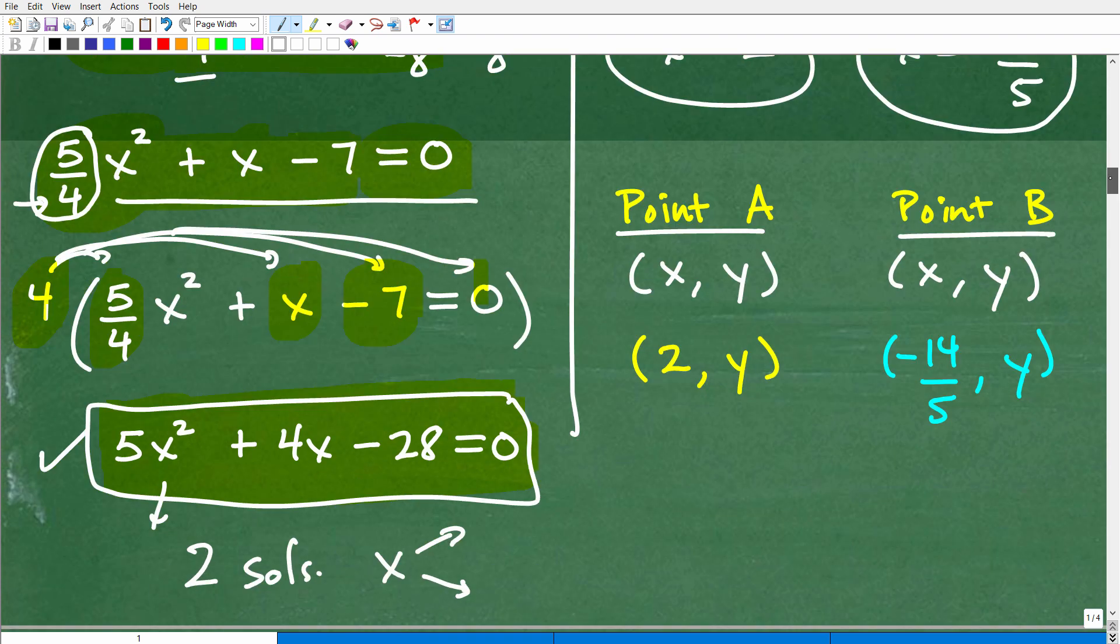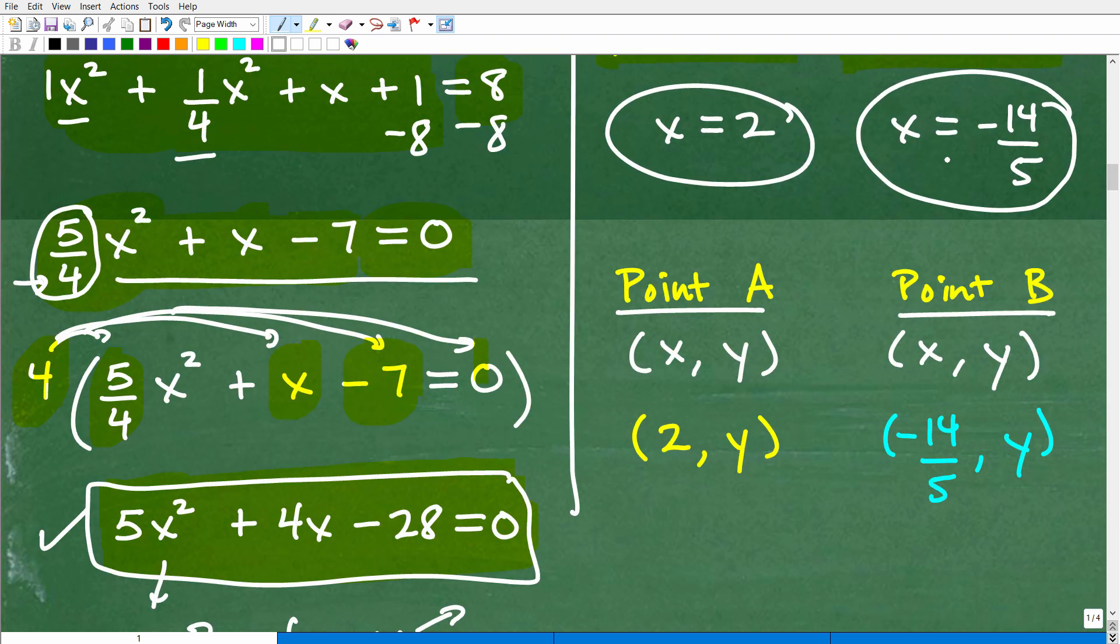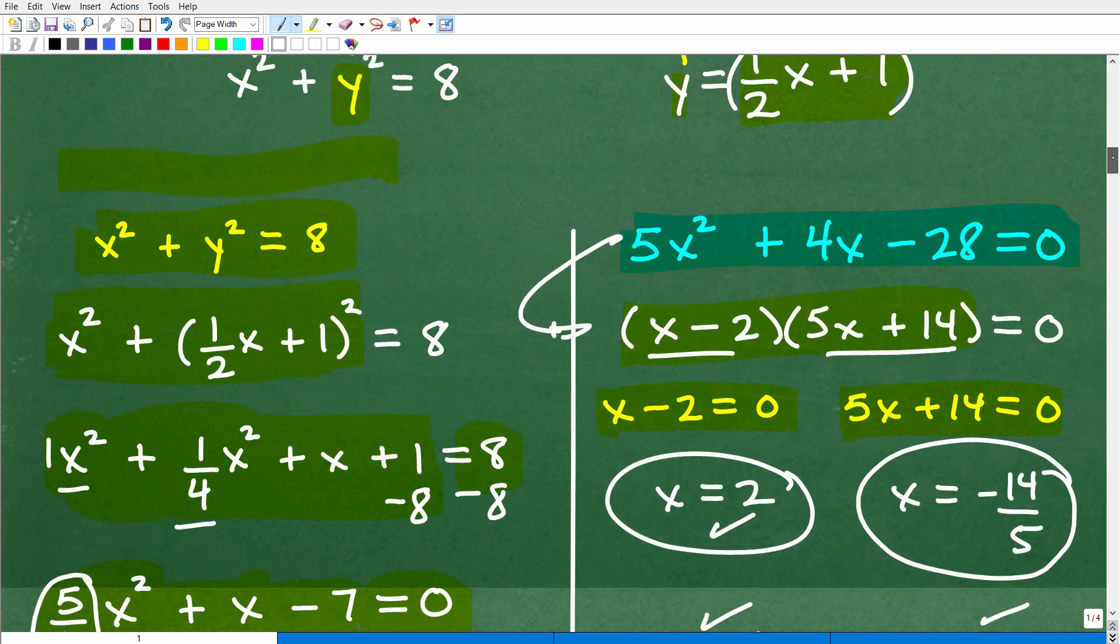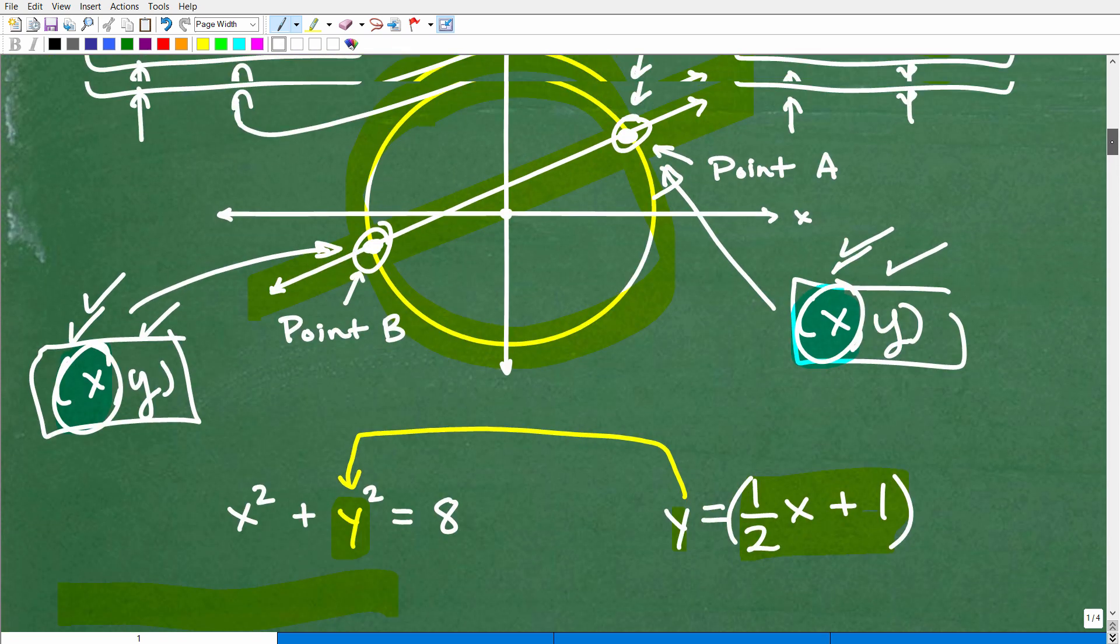Okay, so what does that mean, though? Well, we just found the x coordinates for these respective points. We got point A and point B, and point A, its x coordinate is going to be two. Okay, and point B, its x coordinate is going to be negative 14 over five. Now, how do we know that? Well, I'm calling, how do we know which one's A, which one's B?